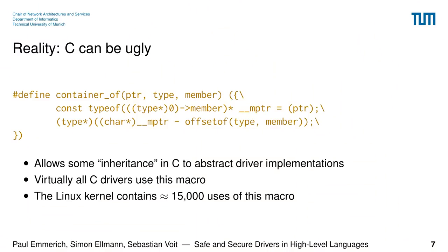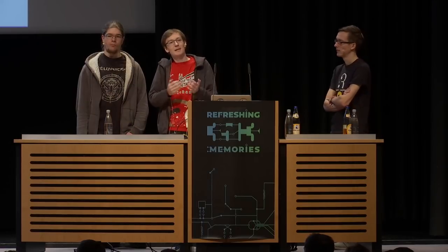Does it help if I show you the actual name? Some more hands. This is a kind of fake inheritance, commonly used in drivers to abstract different implementations. It's a macro copied from the Linux kernel, and I've searched through the kernel sources and found 15,000 users of this macro. It's not at all unusual to have C code like this in your driver, even though almost no one can read it. The actual code has a comment linking to a blog post explaining what the macro does.